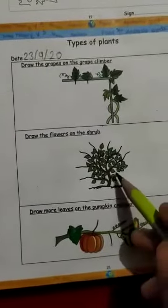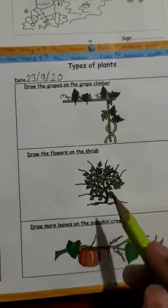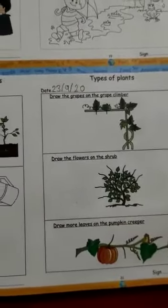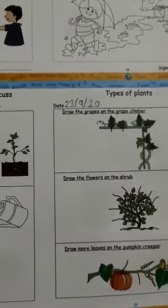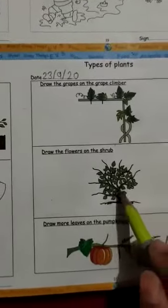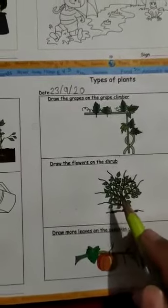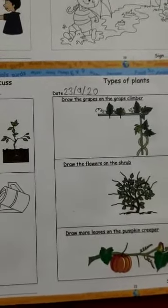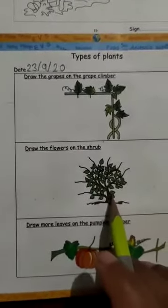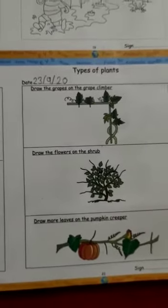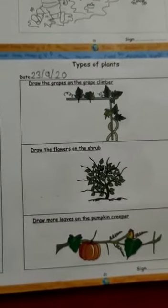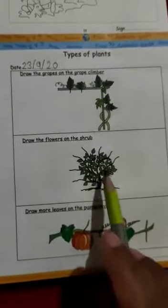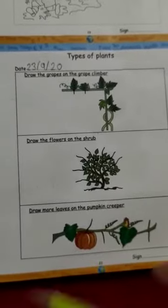The second type of plant is a shrub. Shrubs are small plants — they are smaller than trees. They have many thin and woody branches that grow close to the ground. They also live for many years. Examples include mehendi, cotton, china rose, jasmine, and rose. Your homework is to draw flowers on the shrub.